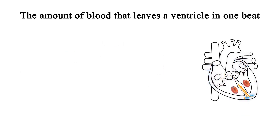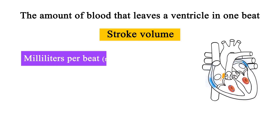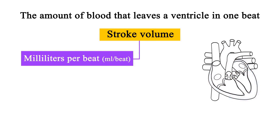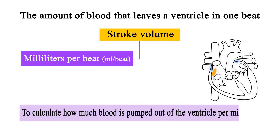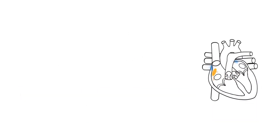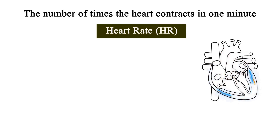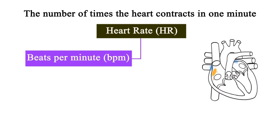The amount of blood that leaves a ventricle in one beat is known as stroke volume. Stroke volume is measured in units of milliliters per beat. In order to calculate how much blood is pumped out of the ventricle per minute, stroke volume must be multiplied by the number of contractions that occur per minute. The number of times the heart contracts in one minute is known as heart rate and is measured in units of beats per minute.